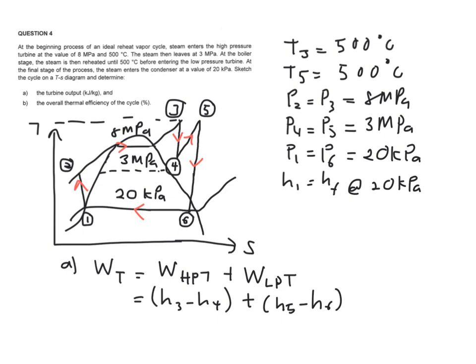So next is for you to find your thermal cycle efficiency where you can make use of your work net over your Q in, or 1 minus your Q out over your Q in. But since the first question is asking you about your work turbine, it is best if you make use of this equation so that you will save time for not to find this Q out.